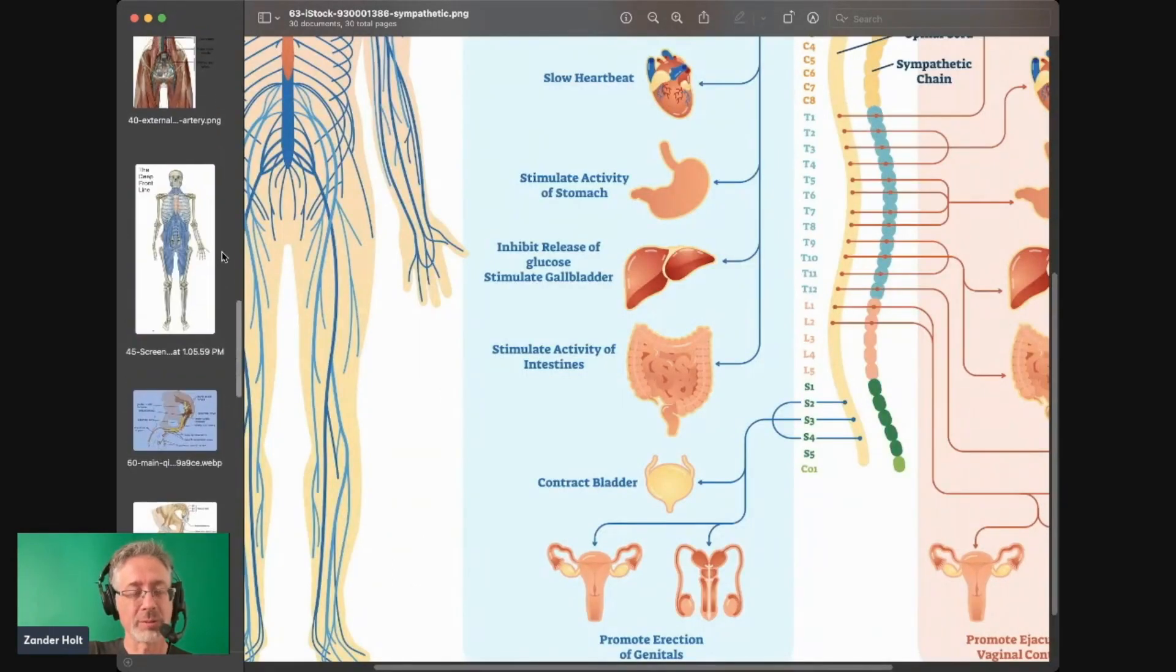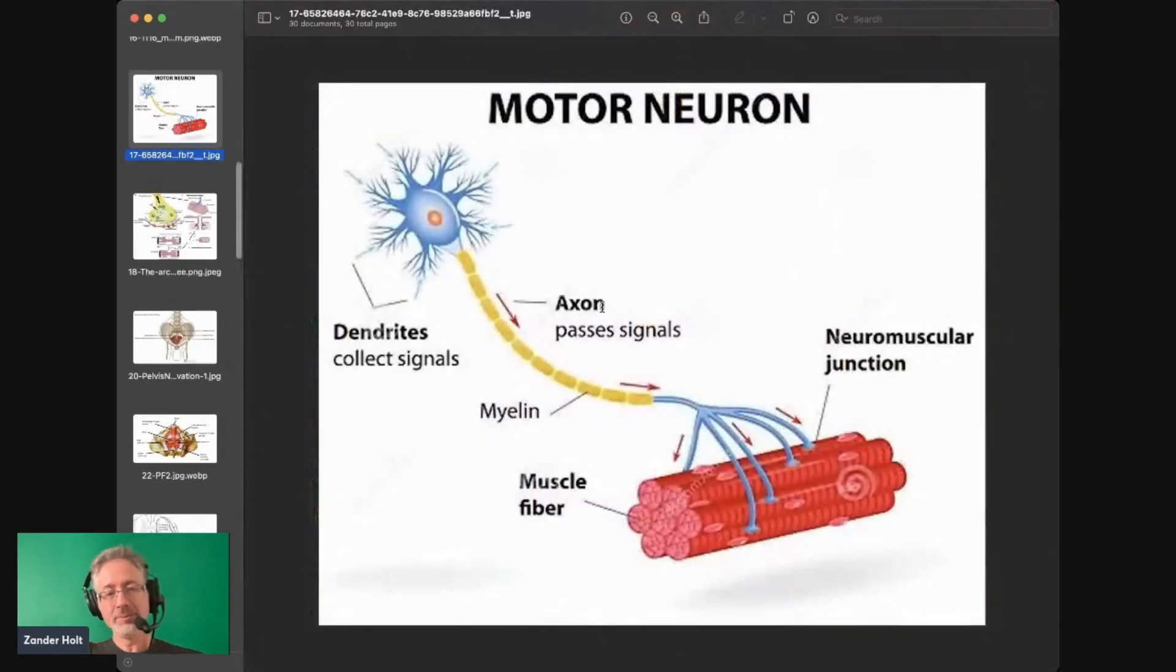Let's go back to this motor unit real quick. Here we go. Motor neuron, neuromuscular junction. Once again, just to remind you, nothing happens, right? The muscle doesn't do anything unless the nervous system tells it to.